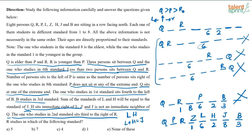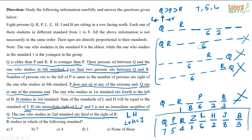The remaining standards to assign are 7, 5, and 4 for Q, P, and R respectively, since Q is elder than P is elder than R. So Q gets 7th standard, P gets 5th standard, and R gets 4th standard. Therefore, R studies in the 4th standard — that is the answer to the first question.